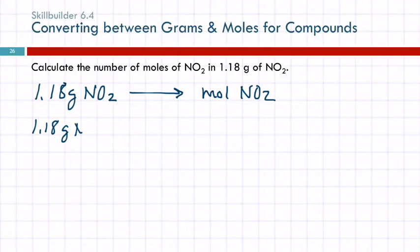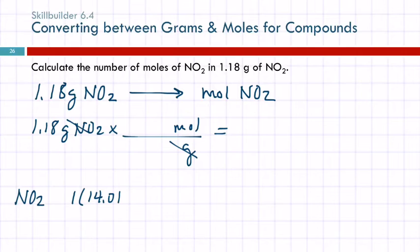1.18 grams of NO2. We just have one factor here. We're going to have moles on the top and grams on the bottom, and our units cancel out nicely. Where do we get the numbers for that conversion factor? We need to use the periodic table and we need to use the formula for the compound. So here we've got NO2. That tells us what to do with the numbers that we find on the periodic table.